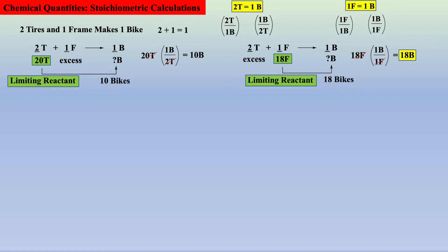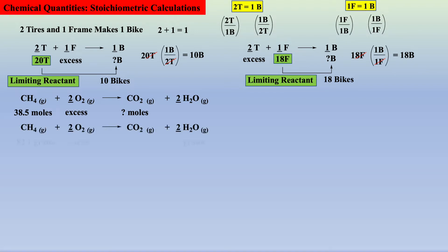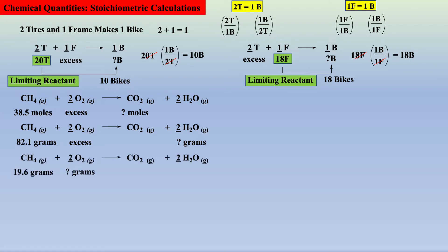Many of the same types of questions can also apply to a balanced chemical equation. For example, one could be asked: if 38.5 moles of methane are reacted with excess oxygen, how many moles of carbon dioxide will be produced? Or, if 82.1 grams of methane are reacted with excess oxygen, how many grams of water could be produced? Or, if 19.6 grams of methane are to be combusted, how many grams of oxygen are required? Or, if 190.8 grams of carbon dioxide are produced, how many grams of methane were combusted? Before we explain the problem-solving strategies, let's make sure we thoroughly understand the implications within the balanced equation for the combustion of methane.